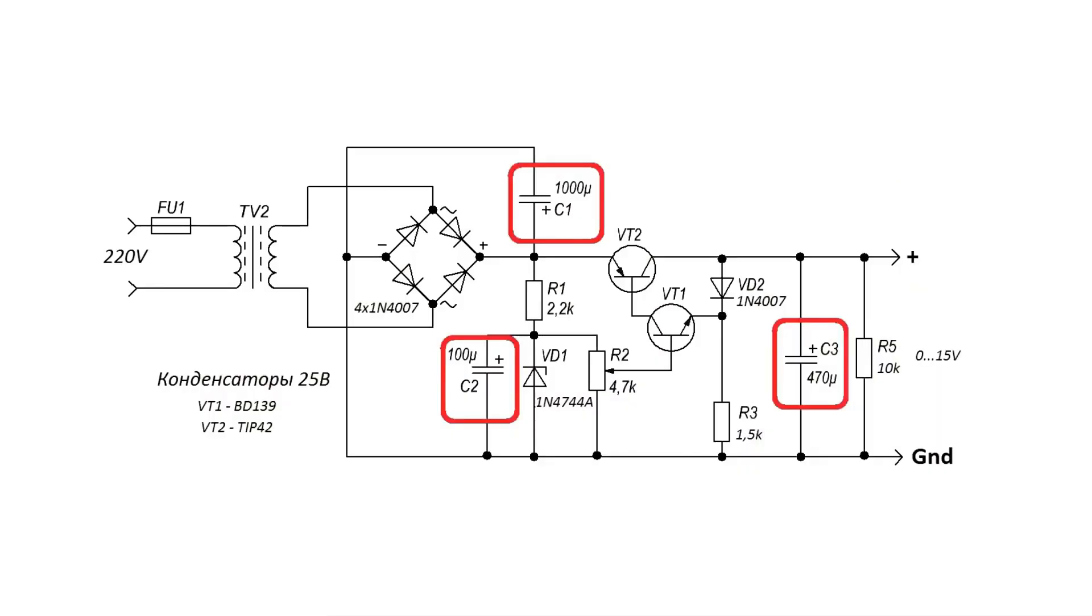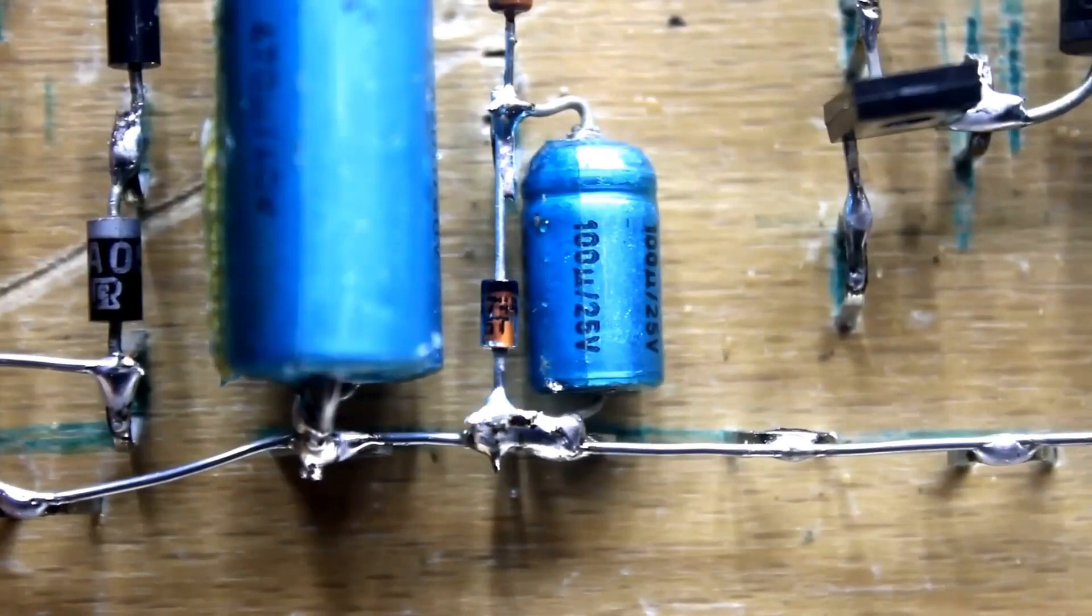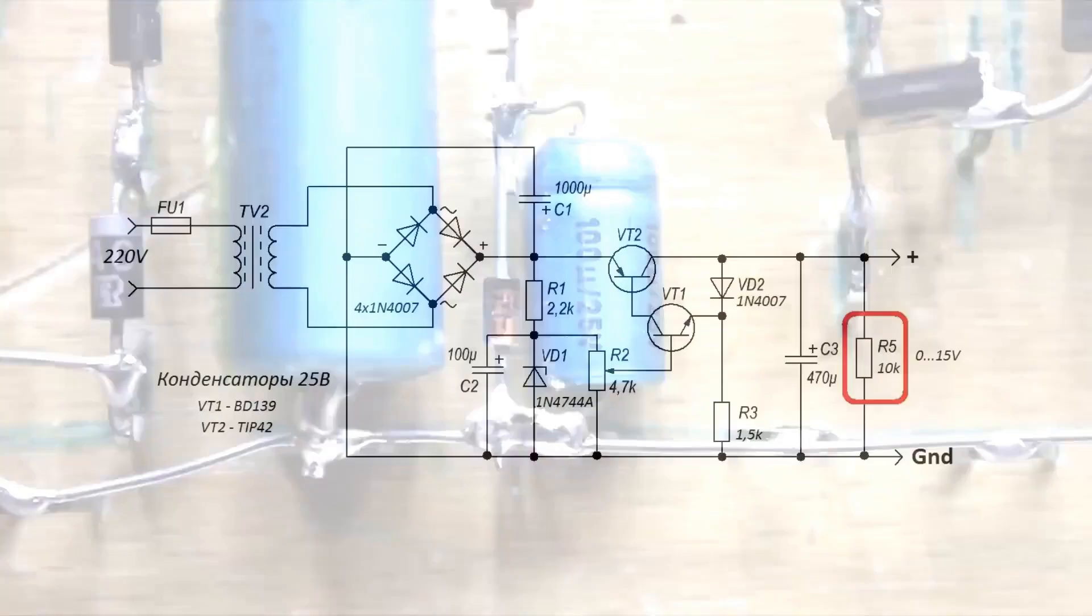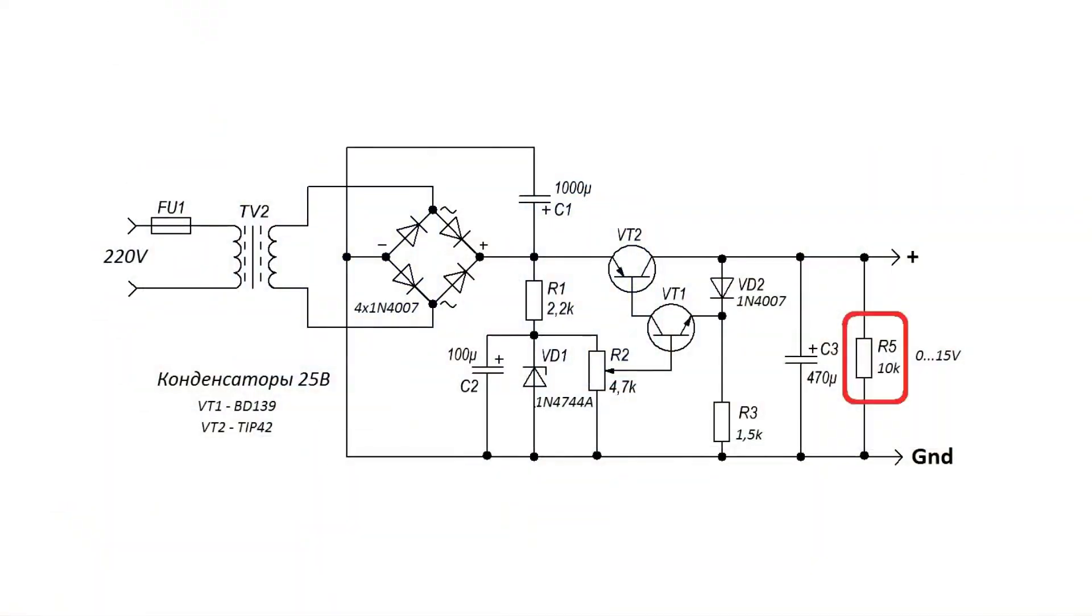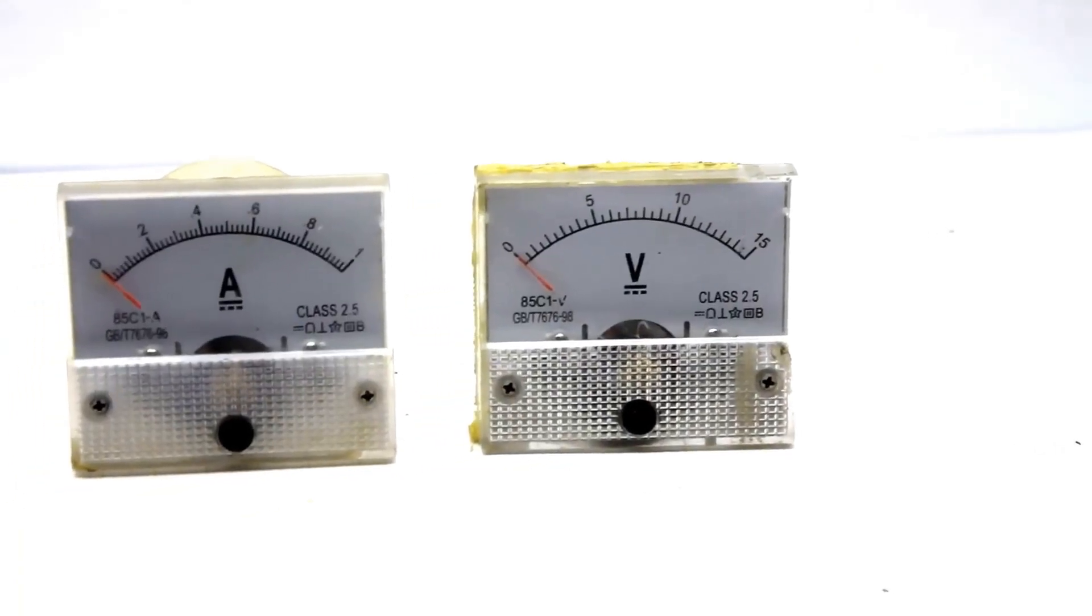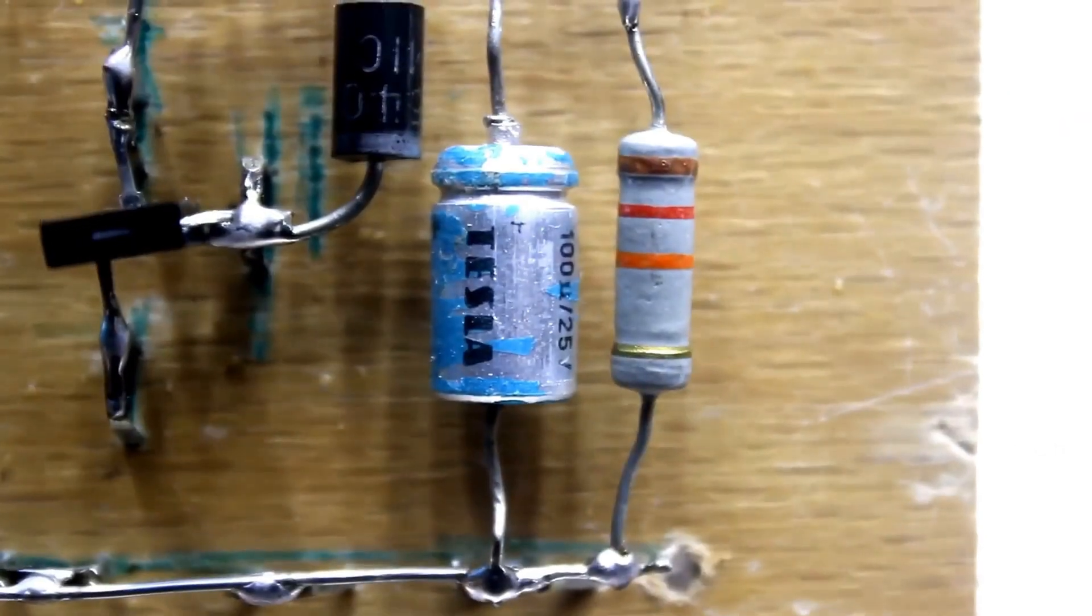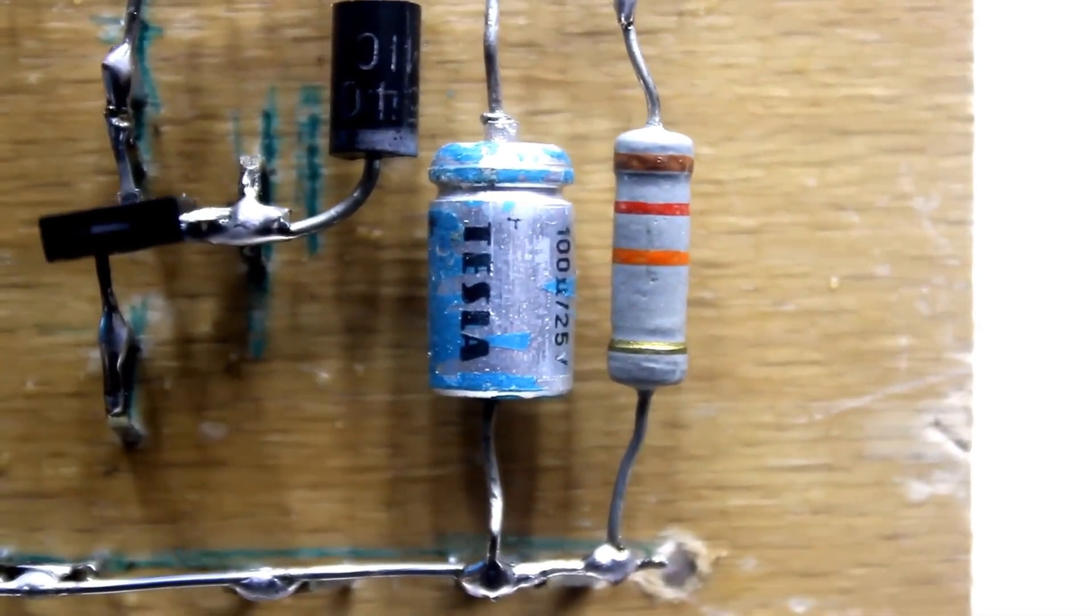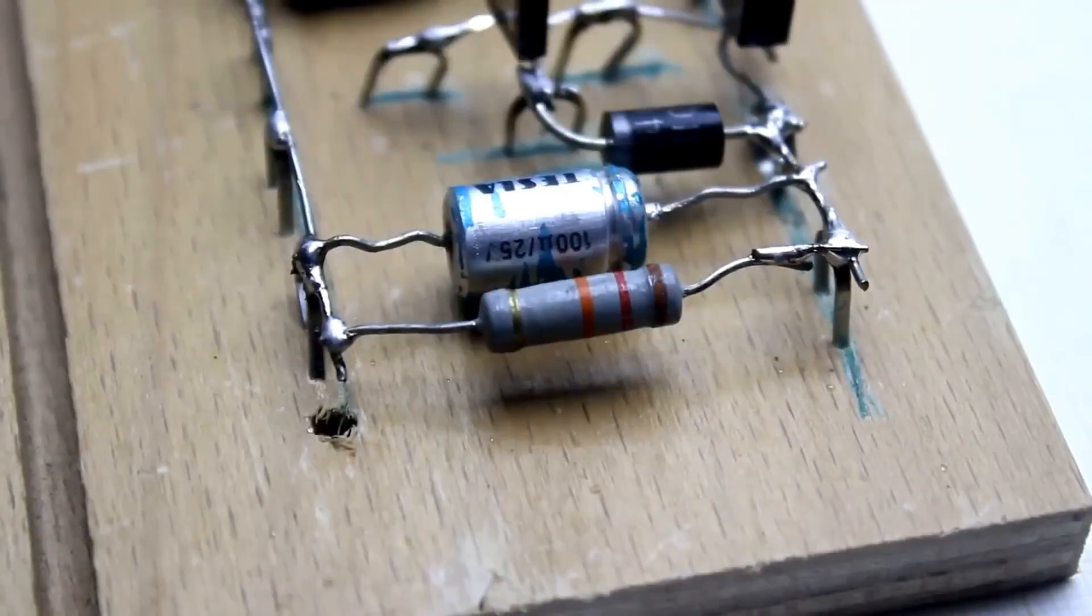The capacitors used are needed to filter the power supply from all sorts of noise and ripples. The resistor at the output of the circuit is a load resistor designed for the correct operation of the pointer voltmeter. Without it, when the output voltage decreases, the output capacitor will remain charged, and the voltmeter needle will move with a delay.